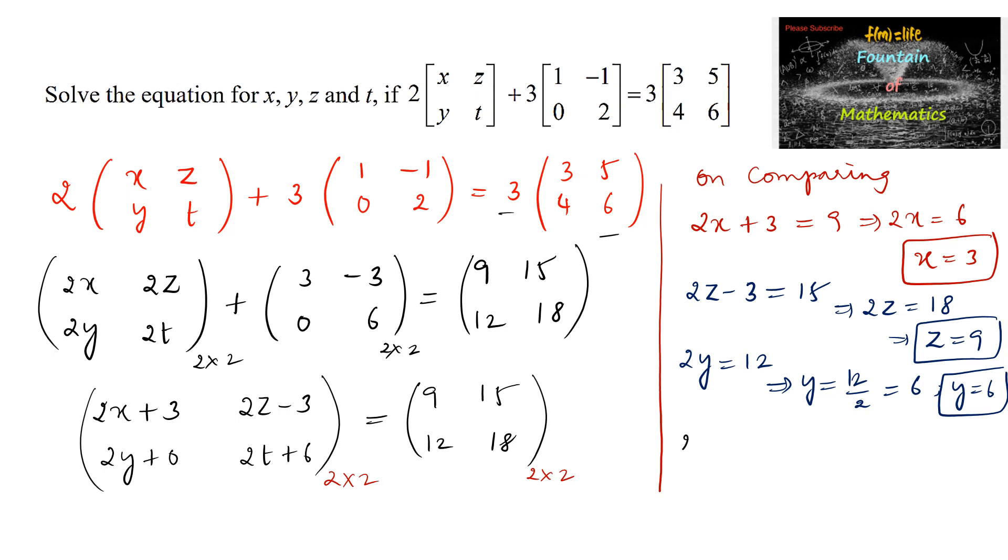And last one, 2t plus 6 is equal to 18. So we can write 2t is equal to 18 minus 6, 12. We can write t is equal to 12 upon 2 is 6.